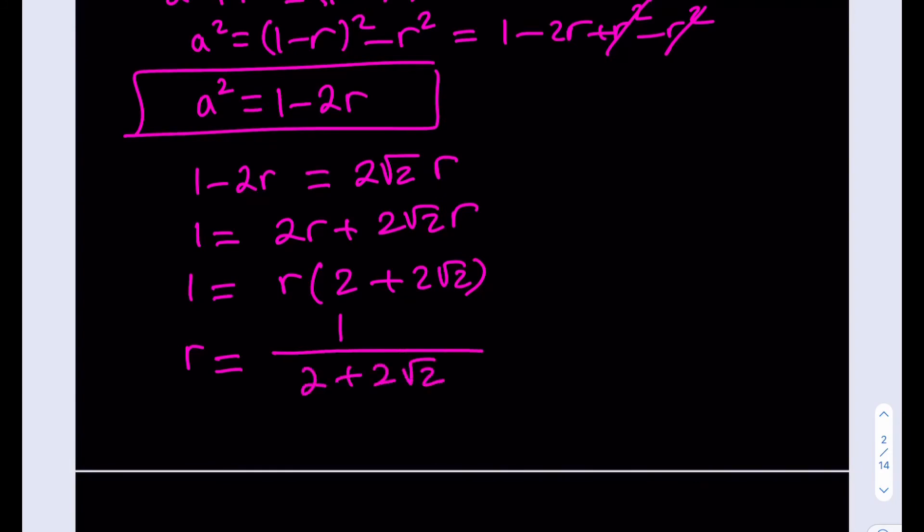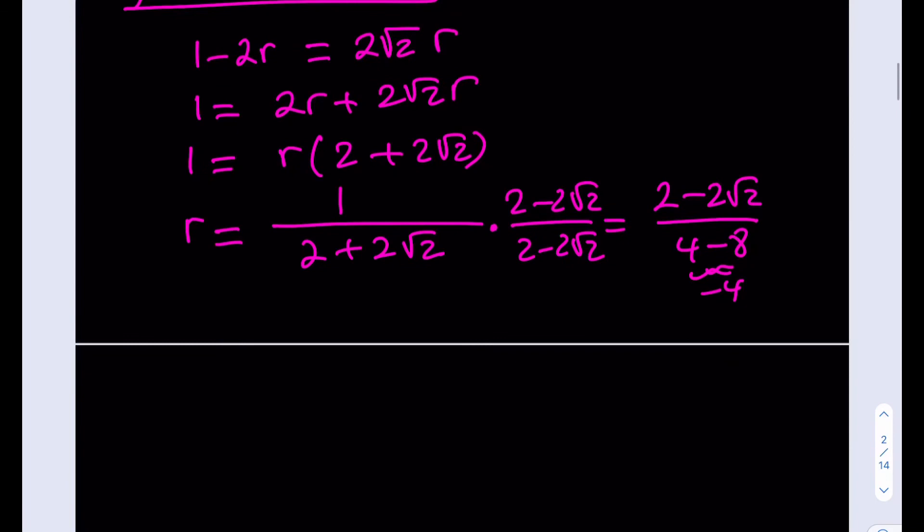And obviously we can just rationalize the denominator here. Multiply by the conjugate. That's going to give you 2 minus 2 root 2 divided by, when you multiply these two expressions from difference of two squares, you're going to get a squared minus b squared, which is 4 minus 8. That's going to be a negative 4. So if you go ahead and invert both the numerator and denominator, you're going to be getting 2 root 2 minus 2 divided by 4. And if you simplify this, you're going to get the answer.